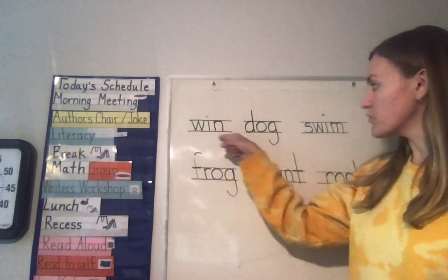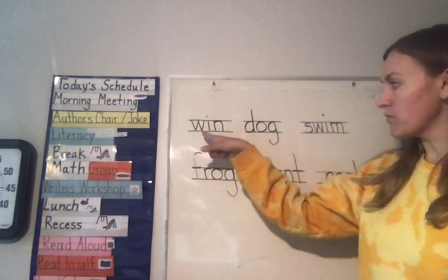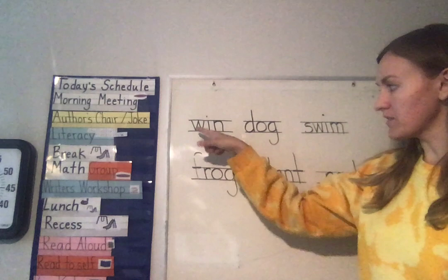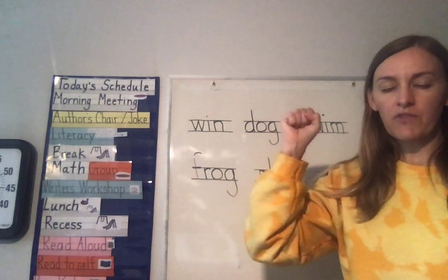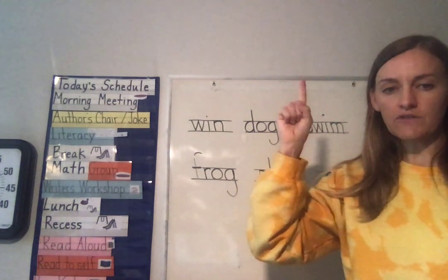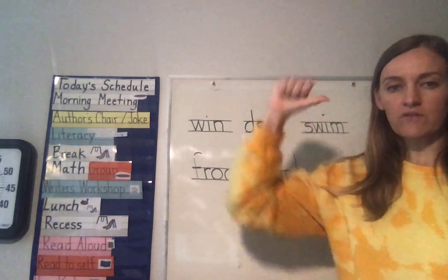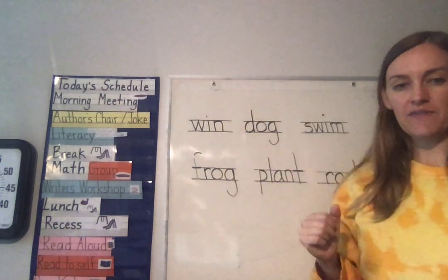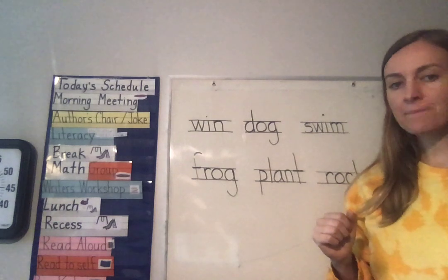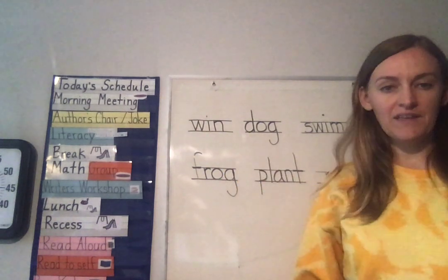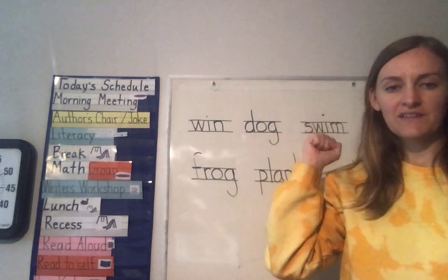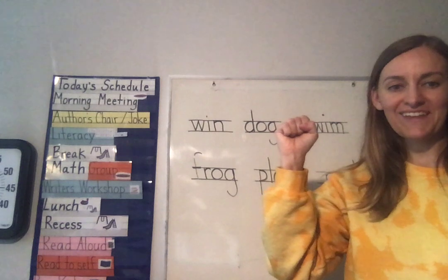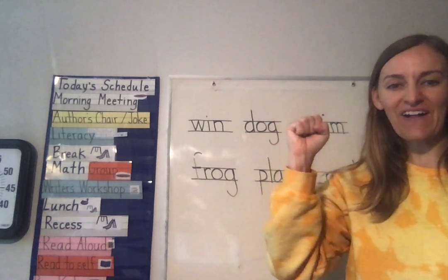Let's start with the word 'when.' We'll say the letters and then show with our hands if they're tall, small, or descending as we say them. W — small, H — small, E — small, N — small.